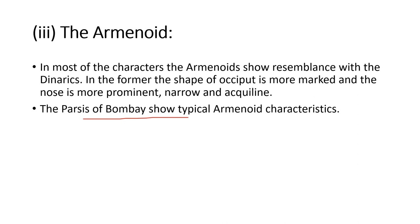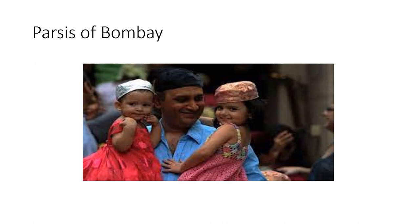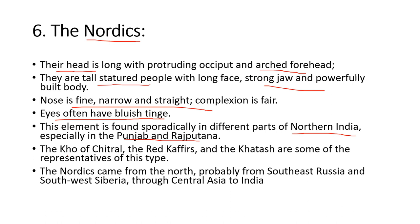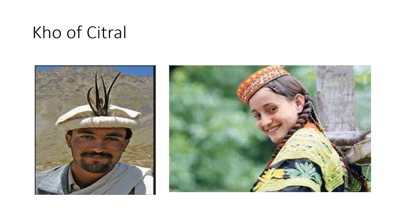The sixth and last classification is Nordic. Their head is long with an arched forehead, very tall stature, strong jaw, and powerfully built body. Nose is fine, narrow, and straight. Eyes often have a bluish tinge. These features are found in northern India, especially in Punjab, among Rajputs, and the Kho of Chitral. Such characteristics can be seen in Rajputs and people of Punjab as well. That concludes the video — please like, share, and subscribe.